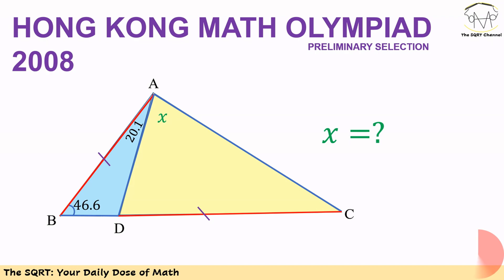We also know that angle BAD is equal to 20.1 degrees, and we want to find angle X. Before moving forward to the solution, make sure you pause the video to think about this problem.